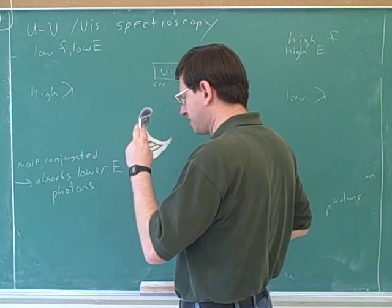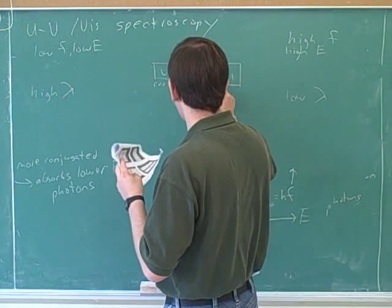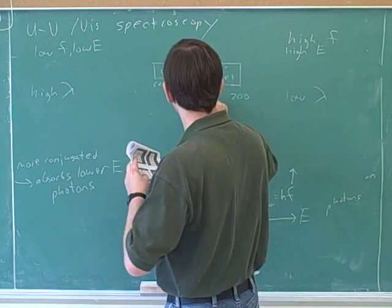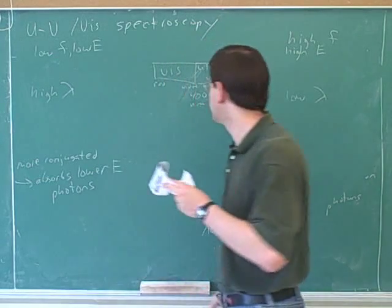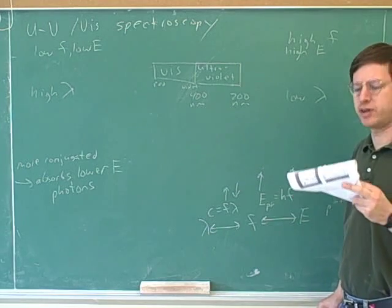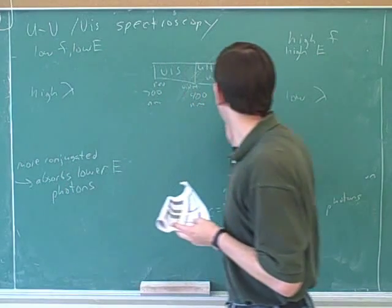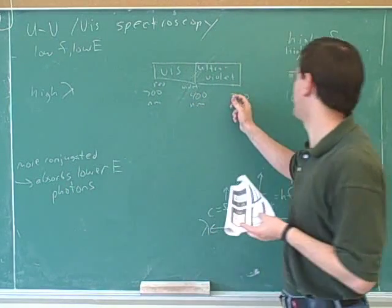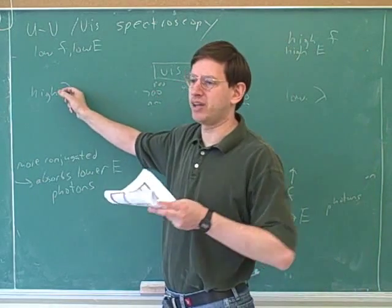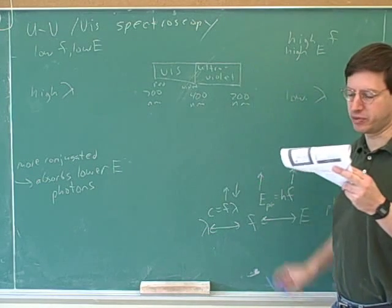Now, ultraviolet light goes from 200 to 400 nanometers. And do you remember what the range of visible light is, from 400 nanometers to about 700 nanometers? Why am I making the numbers smaller on the right? Because my scale here has low wavelengths on the right. So, here I'm putting 700 on the left, because that's the high wavelength end of what I have on the board. Low wavelength is the high frequency end.